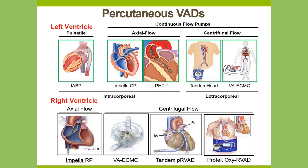The VA ECMO draws venous blood, transfers it to an oxygenator where it is oxygenated, and then delivers it to the arterial circulation. Another way to think about these devices is whether tubing is present. Intracorporeal devices — balloon pump, Impella, percutaneous heart pump — have no visible tubing. In contrast, the Tandem Heart and VA ECMO have tubes that come out of the body; with VA ECMO, you will see dark venous blood return as bright oxygenated blood. Most current percutaneous heart pumps are continuous flow pumps, while the balloon pump remains the last pulsatile percutaneous pump.